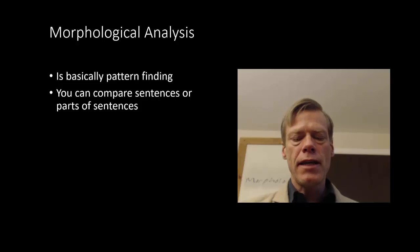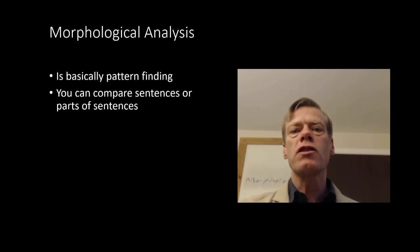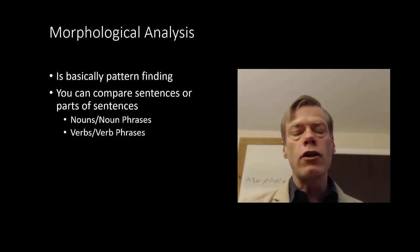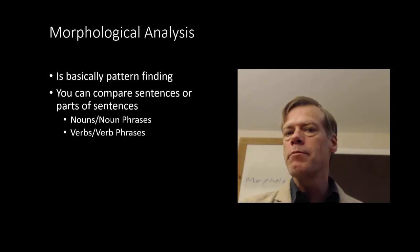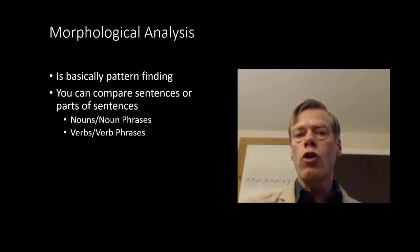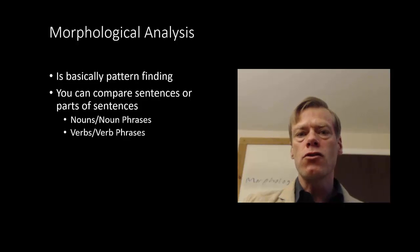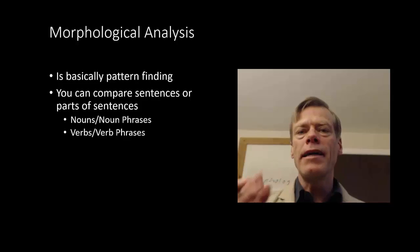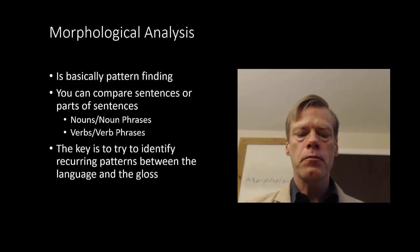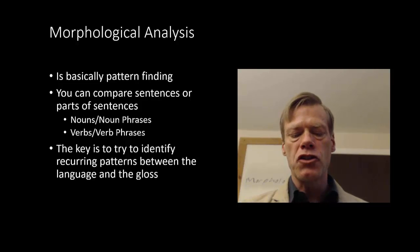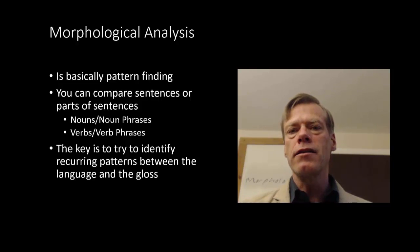You can compare sentences to sentences, or parts of sentences to other parts of sentences. So for example, we could go down to the level of the noun and compare it to other nouns, or the level of the verb and compare it to other verbs, or go a little bit higher to noun phrases and compare them to other noun phrases, or verb phrases to verb phrases. The idea is to compare like with like. The key is to try to identify recurring patterns between the language and the gloss.